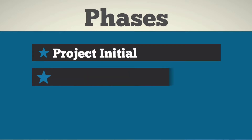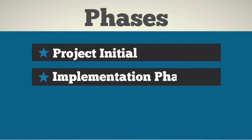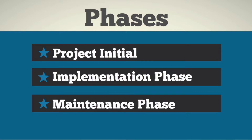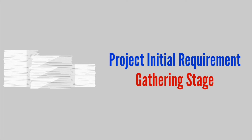The second phase is the implementation phase, and the third is the maintenance phase. Let us discuss each phase and the corresponding activities involved. In the project initial requirement gathering stage, a business analyst may be involved in the following activities.